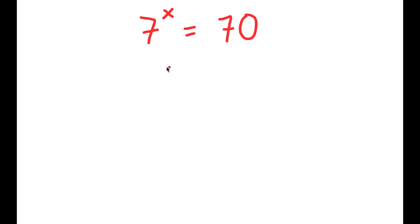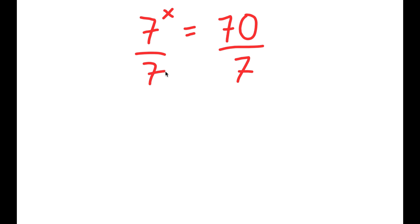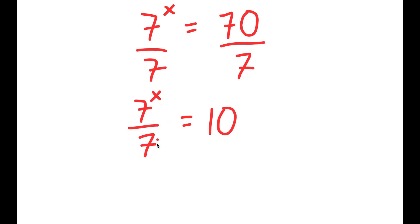On this problem, I have 7 to the power of x is equal to 7. To solve this, I'm going to first start by dividing both sides by 7. So then 70 divided by 7 is 10, so I have 7 to the power of x over 7 is equal to 10.